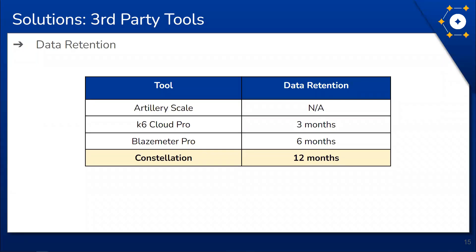On data retention: cloud-based SaaS solutions retain data on a rolling subscription basis. Once the subscription ends, the data is automatically deleted or there may be an option to purchase data retention. Constellation's data retention period is 12 months — AWS's maximum period — meaning Constellation can keep data for an extended period without paying a monthly subscription outside of the AWS fees.